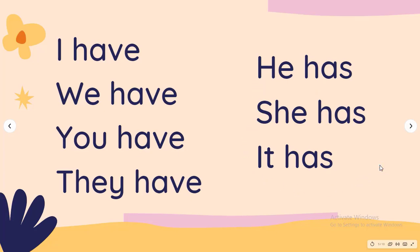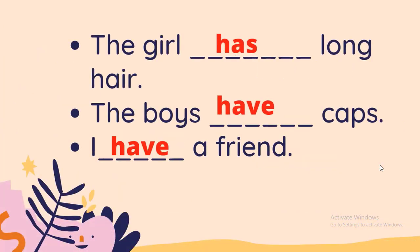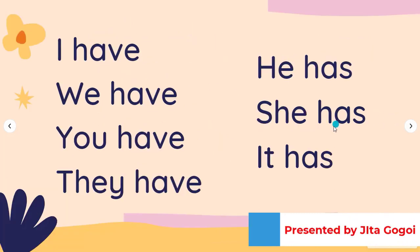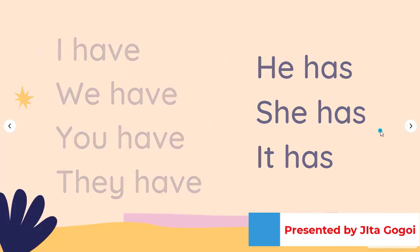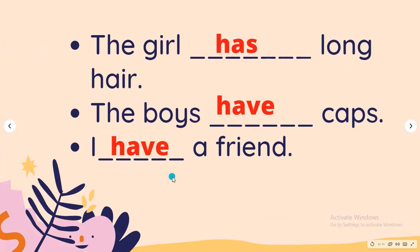Now let's have some examples: The girl has long hair. The boys have caps. I have a friend. The girl has long hair, the boys have caps, I have a friend.